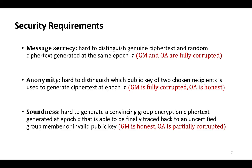Subsequently, the security requirements are message secrecy, anonymity, and soundness. Message secrecy asks that it is hard to distinguish which public key of two chosen recipients is used to encrypt at the same epoch, where GM and OA are fully corrupted. Anonymity asks that it is hard to distinguish which public key of two chosen recipients is used to generate the ciphertext at the same epoch. Soundness asks that it is hard to generate a convincing group encryption ciphertext generated at epoch τ that is able to be finally traced back to an uncertified group member or invalid public key, while the group manager is honest and the opening authority is partially corrupted.